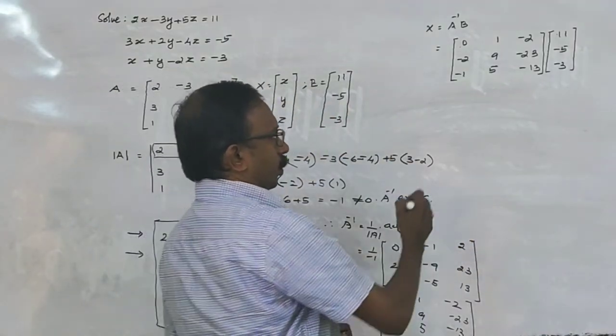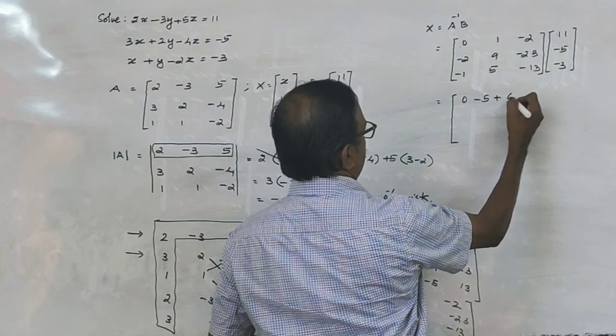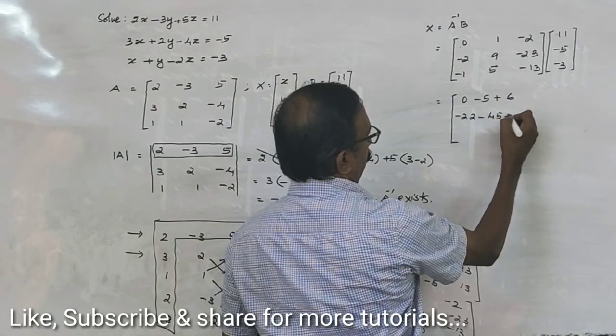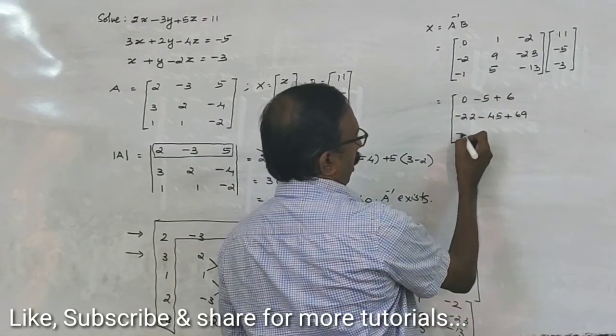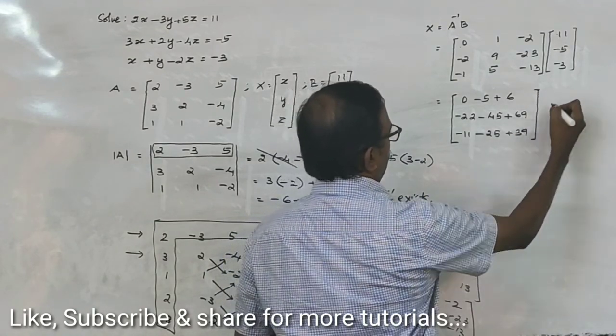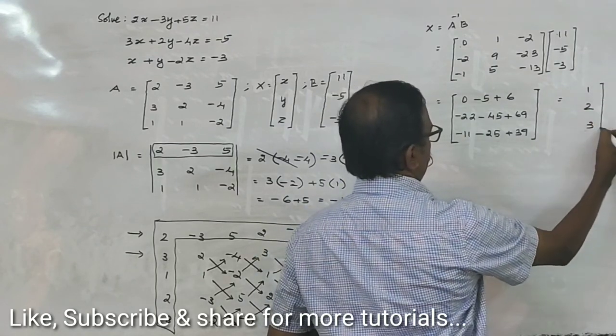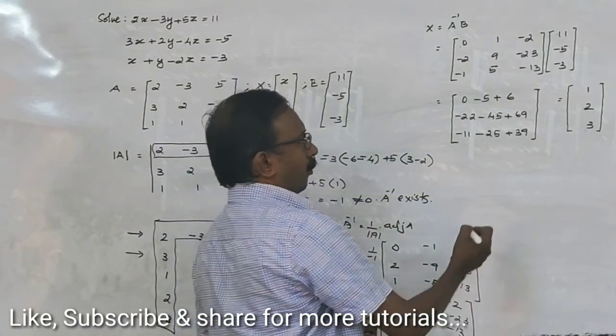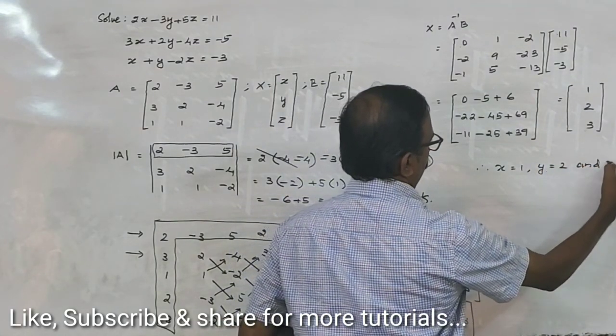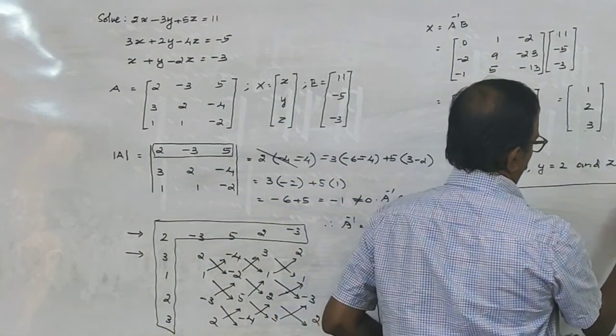I'll get my answer. So: 0 plus (minus 5) plus 6 equals 1. Then minus 22 plus 45 plus (minus 69) equals (calculation error - should be rechecked). Then minus 11 plus 25 plus (minus 9) equals 5. So x equals 1 over 3 times (1, 2, 15), which gives x equals 1, y equals 2, z equals 5.